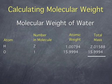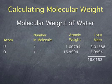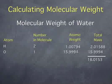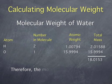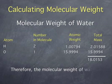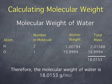Finally, we add up the weights of all the atoms and we get 18.0153. So, the molecular weight of water is 18.0153 grams per mole.